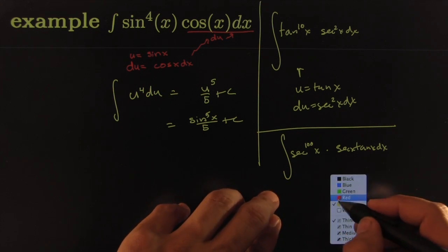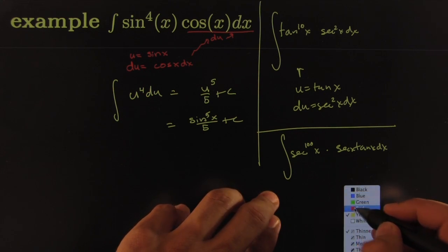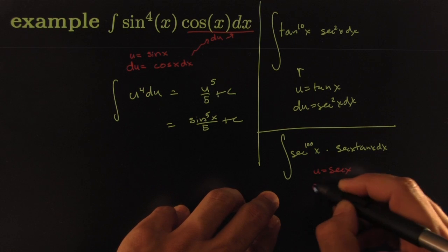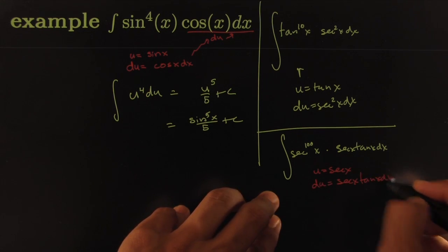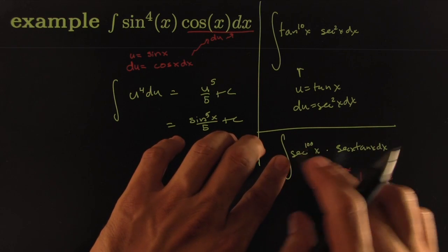If that was the case, you could go with a standard u-sub where u would be equal to secant x. The differential would be secant x tangent of x dx. That works all the time whenever you've got a function here.